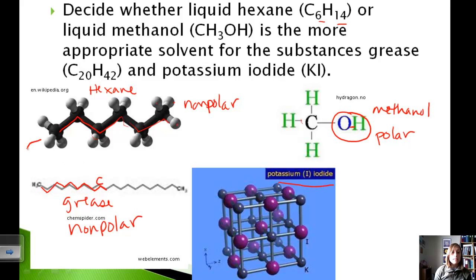And so that means that these two are the perfect match. Now, let's look at potassium iodide. Well, potassium iodide is ionic, which means that it does have some polarity. And so methanol and potassium iodide are also going to go together based on that principle of like-dissolves-like.